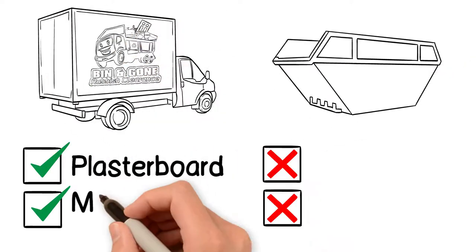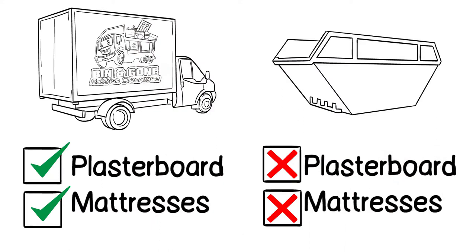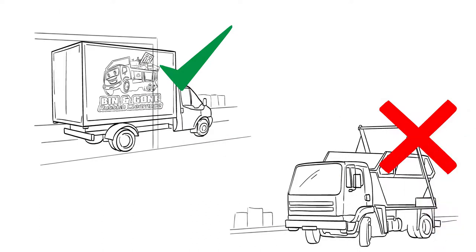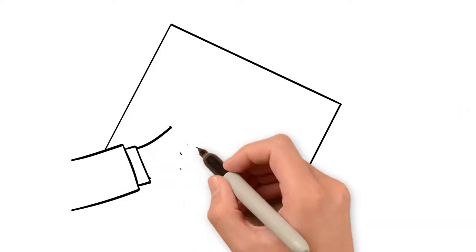We take items skip hire do not, such as plasterboard and mattresses. Our vehicles are smaller than skip lorries and can fit down narrow lanes and driveways that skip lorries can't.